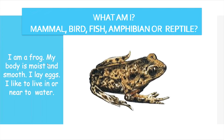I am a frog. My body is moist and smooth. I lay eggs and I like to live in or near water. Which animal am I? A frog is an amphibian because it likes to live in or near water, has a moist and smooth body, and lays eggs.